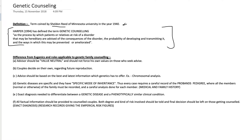The standard definition is given by Harper in 1994. He defines genetic counseling as the process by which patients or relatives at risk of a disorder that may be hereditary are advised of the consequences of the disorder, the probability of developing and transmitting it, and the ways in which this may be prevented or ameliorated.